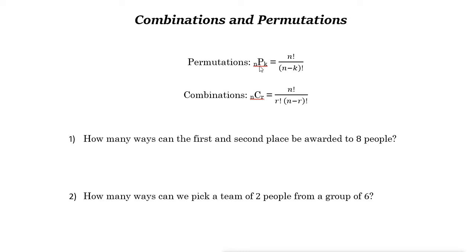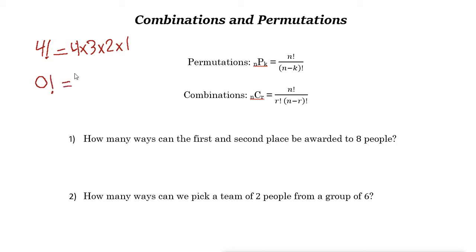This formula says P(n,k) is n factorial. Factorials are products indicated by the exclamation mark. For example, 4 factorial is 4 times 3 times 2 times 1. Note that 0 factorial equals 1 — whenever you see 0 factorial, it's equal to 1. The denominator is n minus k factorial. For combination, C(n,r) is n factorial over r factorial times n minus r factorial.